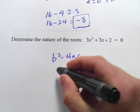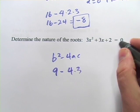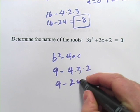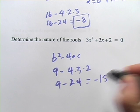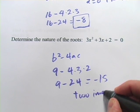b is 3, so b squared is 9. Minus 4 times a times c is 2. So we've got 9 minus 24. This is going to be negative 15. So you're going to have two imaginary roots.